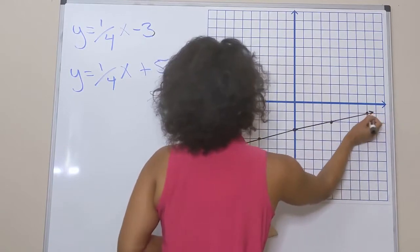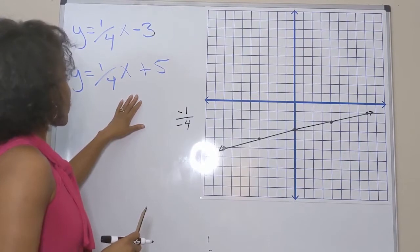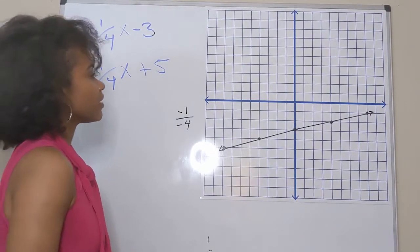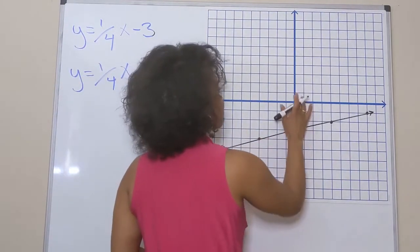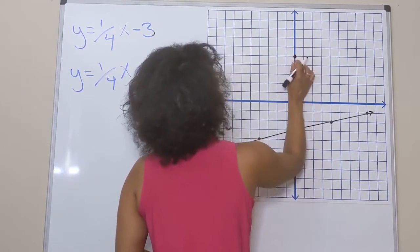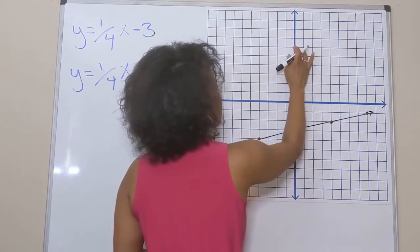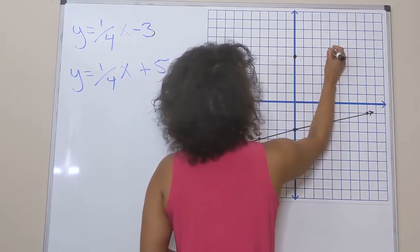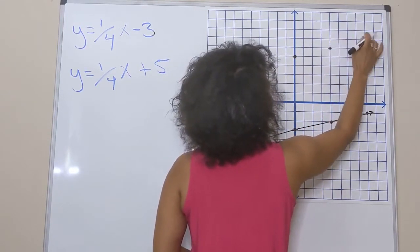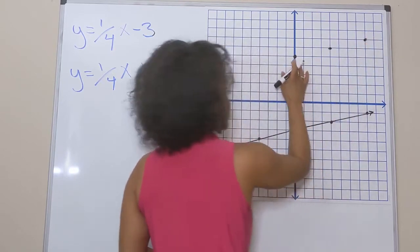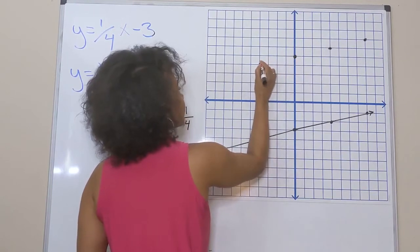Now let's graph the second equation: y equals one-fourth x plus five. Five is my y-intercept, so I go up five on my y-axis. The slope is one-fourth also — rise one, run four — same thing as before. I also go down one and back four to get points on the other side.